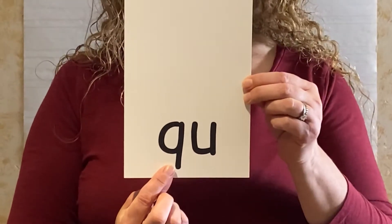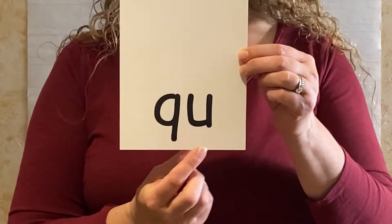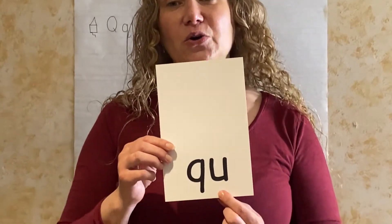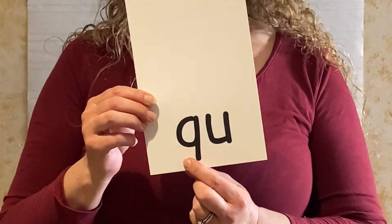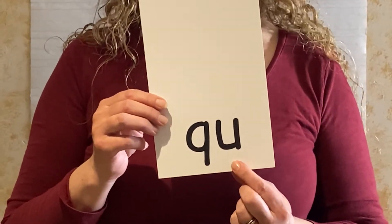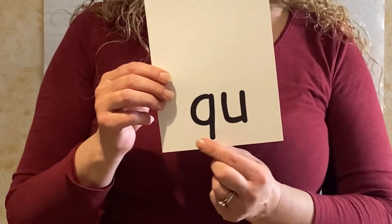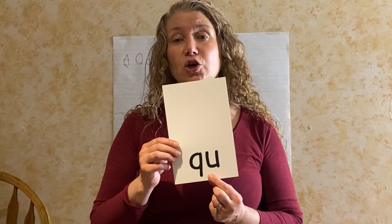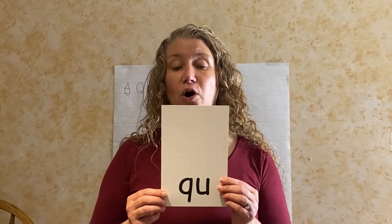The letter is Q, but on the card it has a Q and a U. Do you know why? Because they're very good friends, and whenever you see a Q, the letter U usually follows it in the English language. So they put it together so you remember that letter Q does not like to go out without its friend U. We always see them together — that's why it's together on the card.